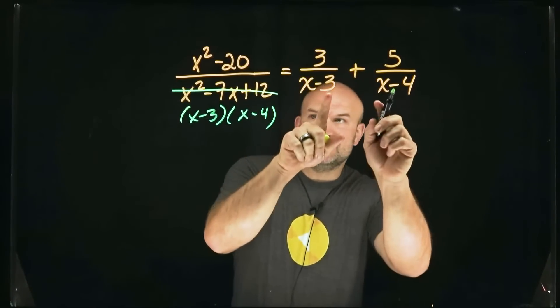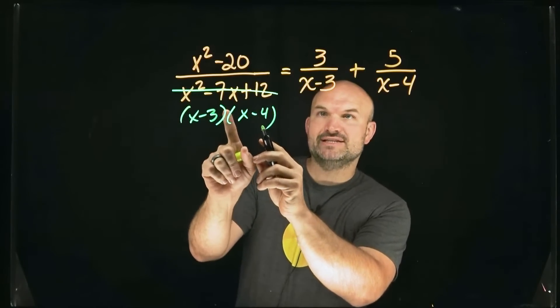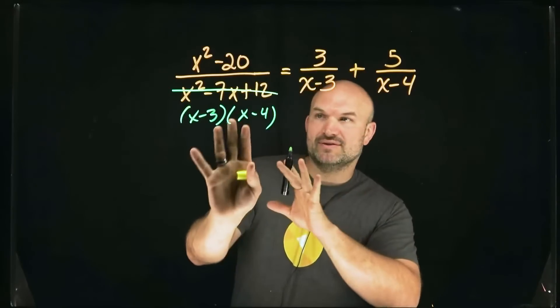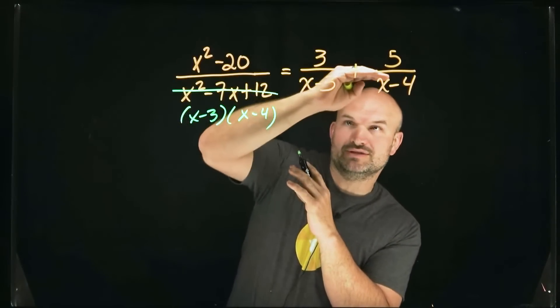So we have both of these denominators represented over in this fraction, and so all we need to do is get these to be exactly the same, and therefore we can go ahead and basically divide them all out and only work with the numerators.